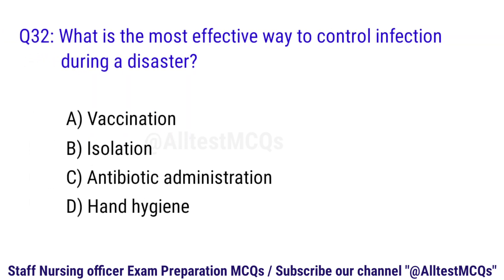Question 32. What is the most effective way to control infection during a disaster? The right option is D. Hand hygiene.